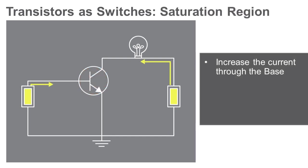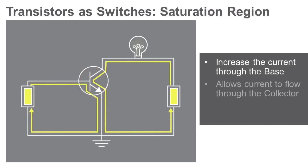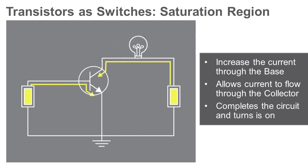To turn the circuit on, increasing the current through the base will allow current to flow through the collector, completing the circuit and turning it on. This is the fundamental behavior of a transistor. When this happens, the current through the collector and the emitter is enough to power the circuit's components.